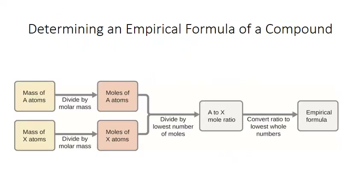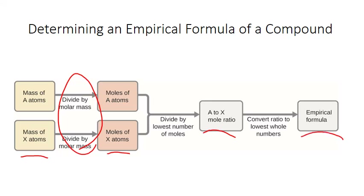Say that we have an unknown compound that's made up of two elements, element A and element X. In order to figure out the formula for that compound, we need to figure out the ratio of A to X in terms of atoms or moles. That will give us the subscripts that we can use for our empirical formula. To do this, we go to the laboratory and make very careful mass measurements of the amount of element A and the amount of element X that we recover when we break the compound apart. If we have masses of our elements, we can convert this into moles using the molar mass, and from moles we can figure out the molar ratio, which is the basis for the subscripts in our empirical formula.